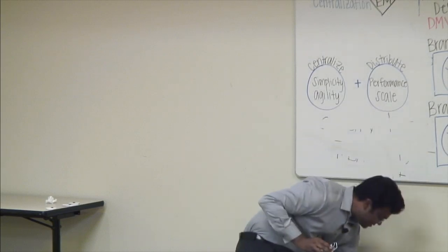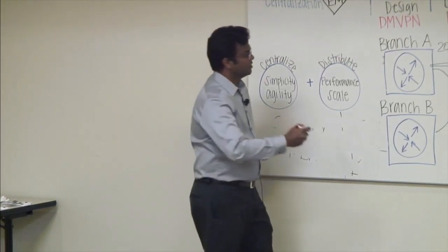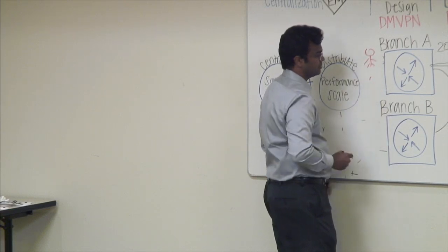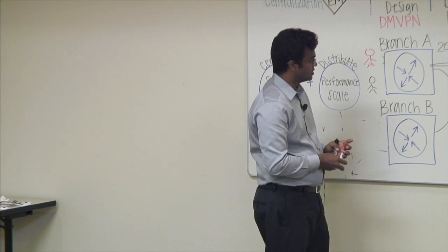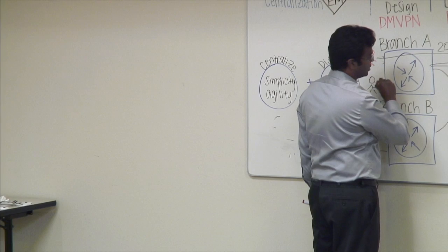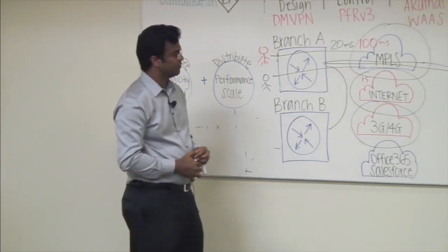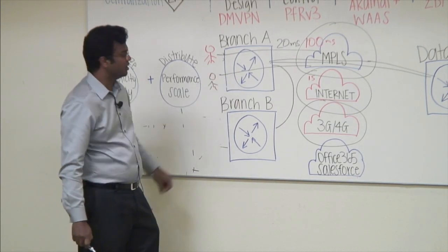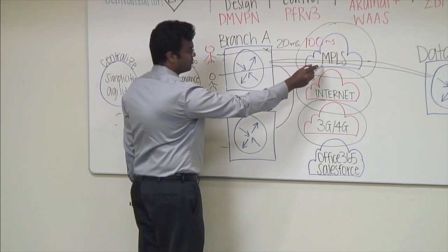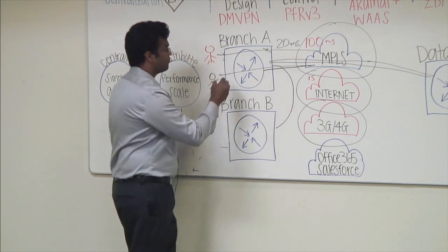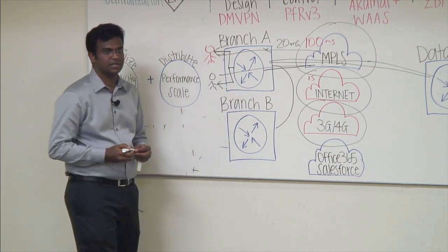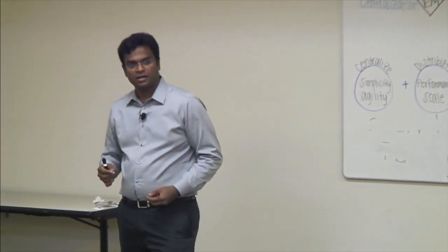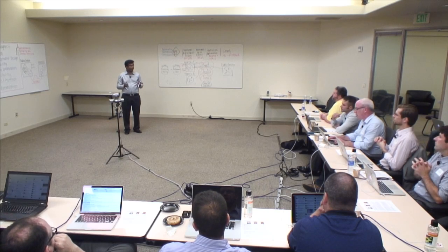With first byte replication, you have User A and User B watching the same video — say, quarterly results or a company announcement. Traditionally, you would have two video streams going over your MPLS or internet network. With first byte caching enabled, you can bring it down to one stream from the provider to your router, and from the router you split it up and deliver both streams locally. This logic comes from Akamai — what we call Akamai Cache Connect — enabled on the router.